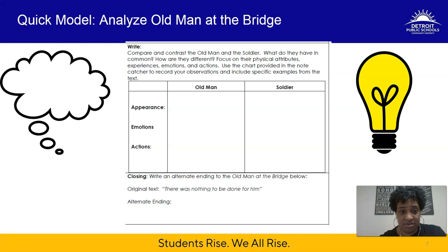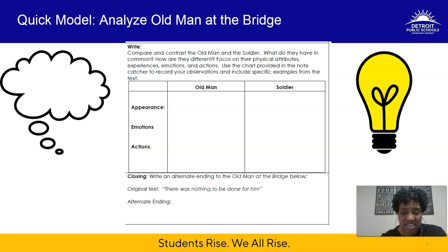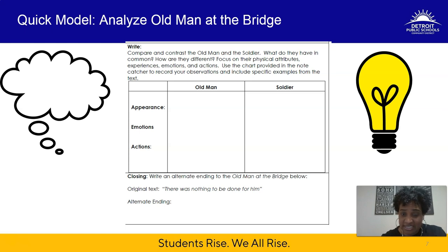The next piece is the compare and contrast of the old man and the soldier — two focal point characters. Put them side by side and think about what they have in common and how they are different. Focus on three areas: their appearance, their emotions, and their actions — all things you've already annotated in lessons one and two. Write brief descriptions in each category for each character, and provide specific examples from the text. Even include the line number and page number — for example, page 755, line 28. Be specific; give me examples.